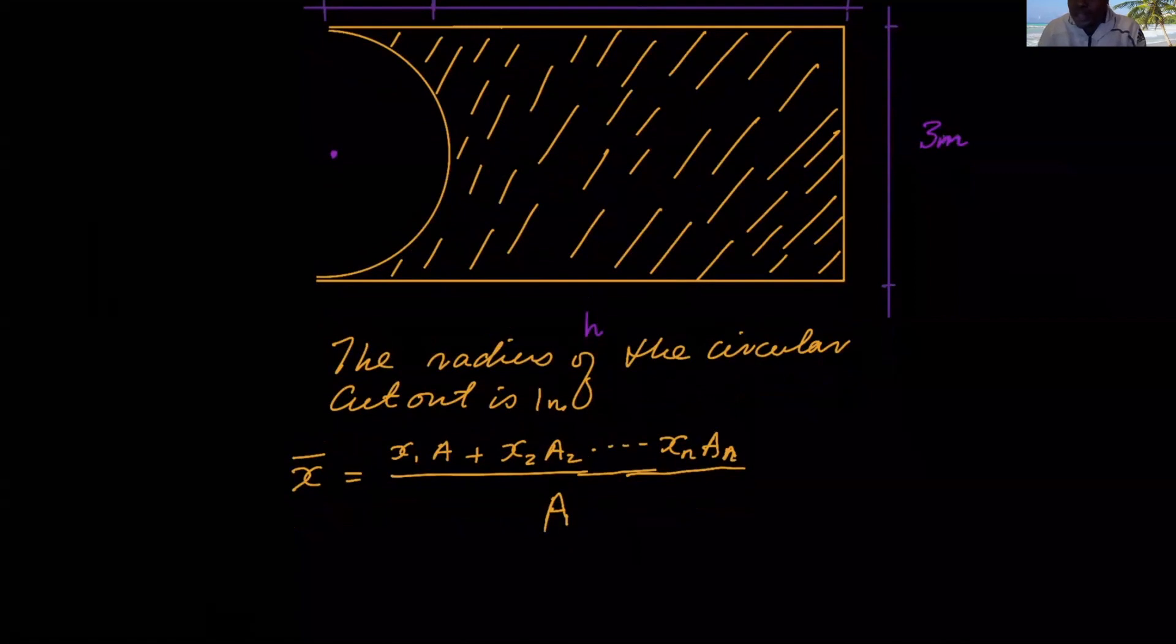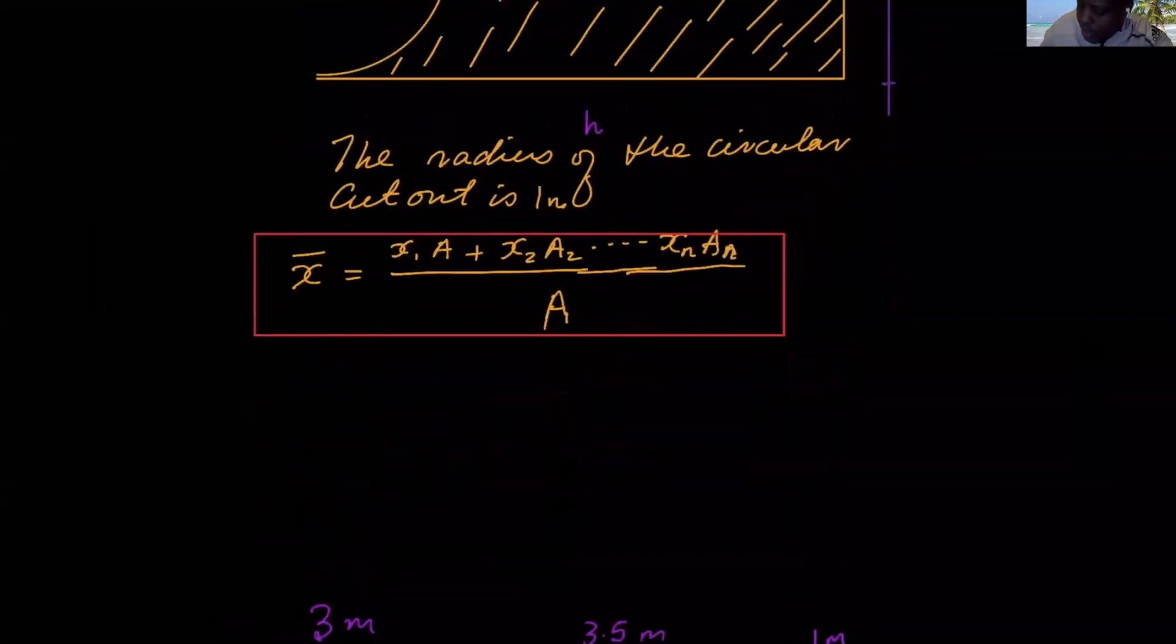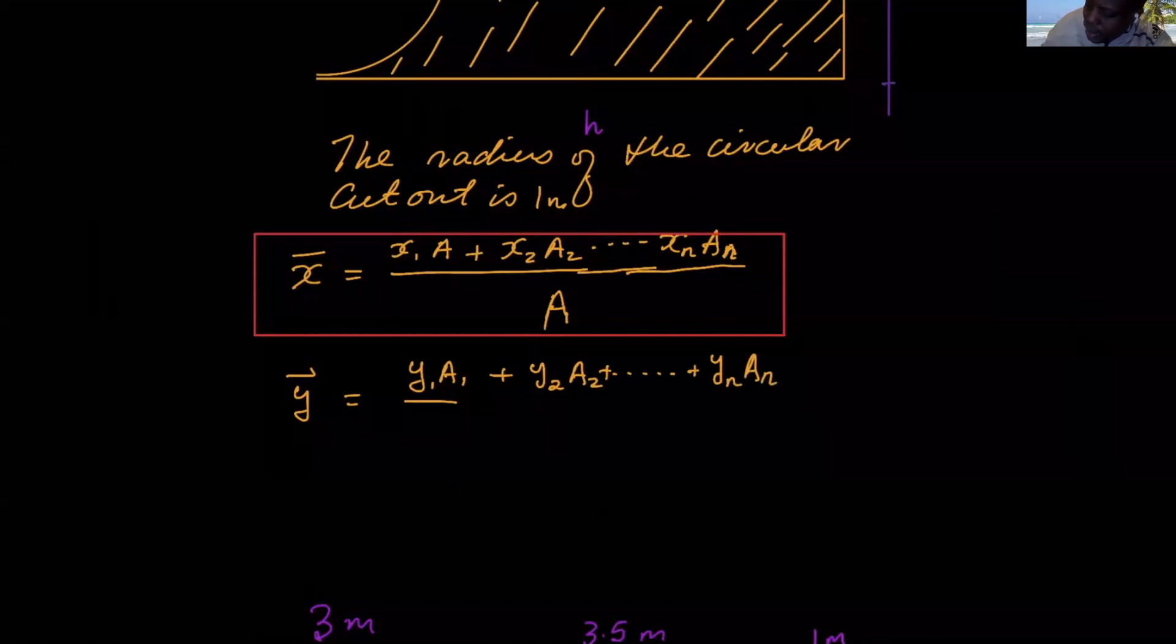So the x component of the center of gravity will be given by the x component of the first object multiplied by its mass or its area in this case. It's easier to calculate the area than to calculate the mass in this case, plus the x component of the second shape multiplied by the area of the second shape, just like the x component of the nth piece multiplied by the area of the nth piece, and then we divide that by the total area of the object. You have to notice that this object is made of different basic shapes. You divide the object into the basic shapes, and then you stick them into this equation. The y will also be found in the same manner.